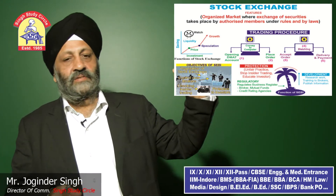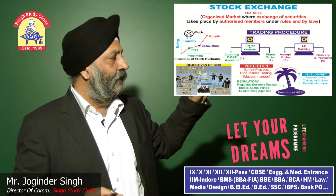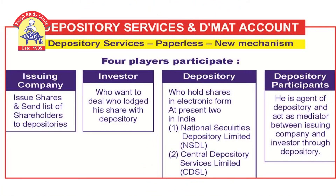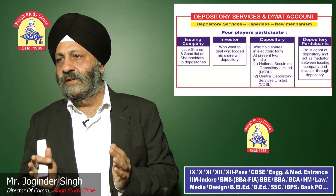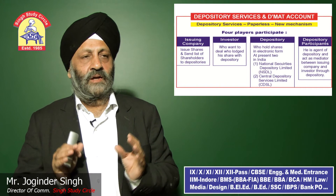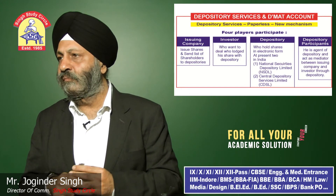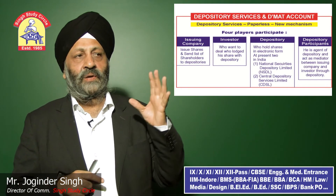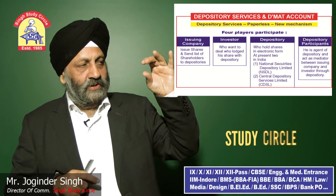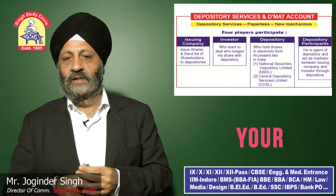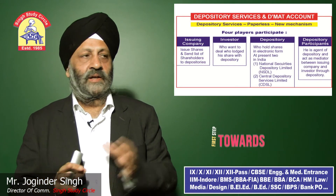Topics covered include: what is a stock exchange, its functions, the functions and objectives of SEBI. Now moving to depository services and the DMAT account. A DMAT account keeps shares in electronic form in banks. This is a paperless mechanism with four players: the issuing company that issues shares, investors who invest money, and depositories.